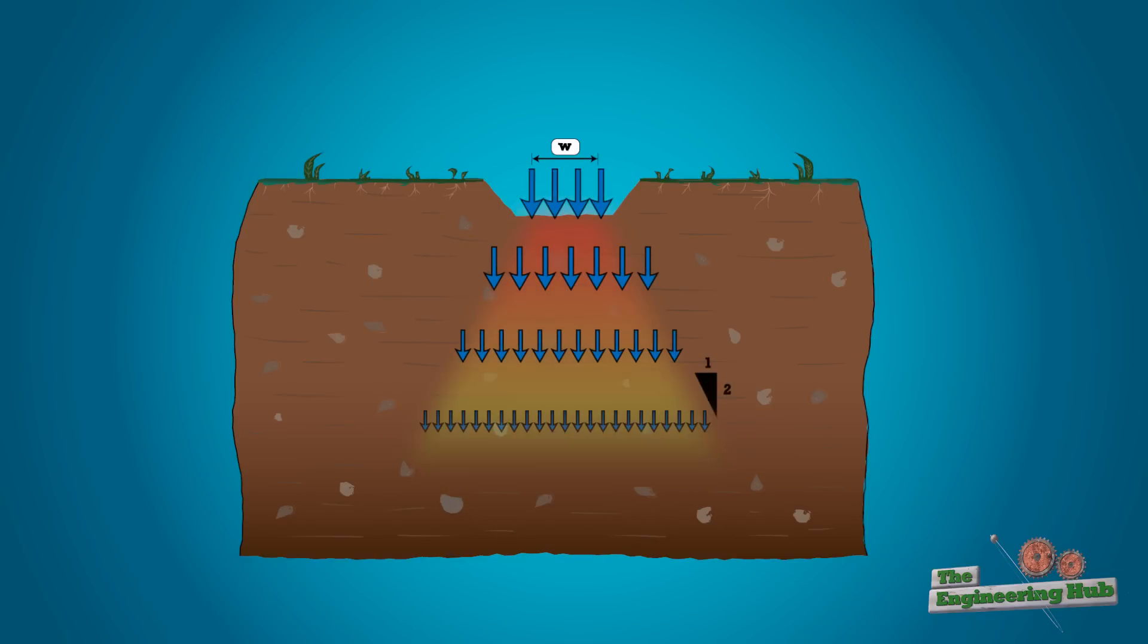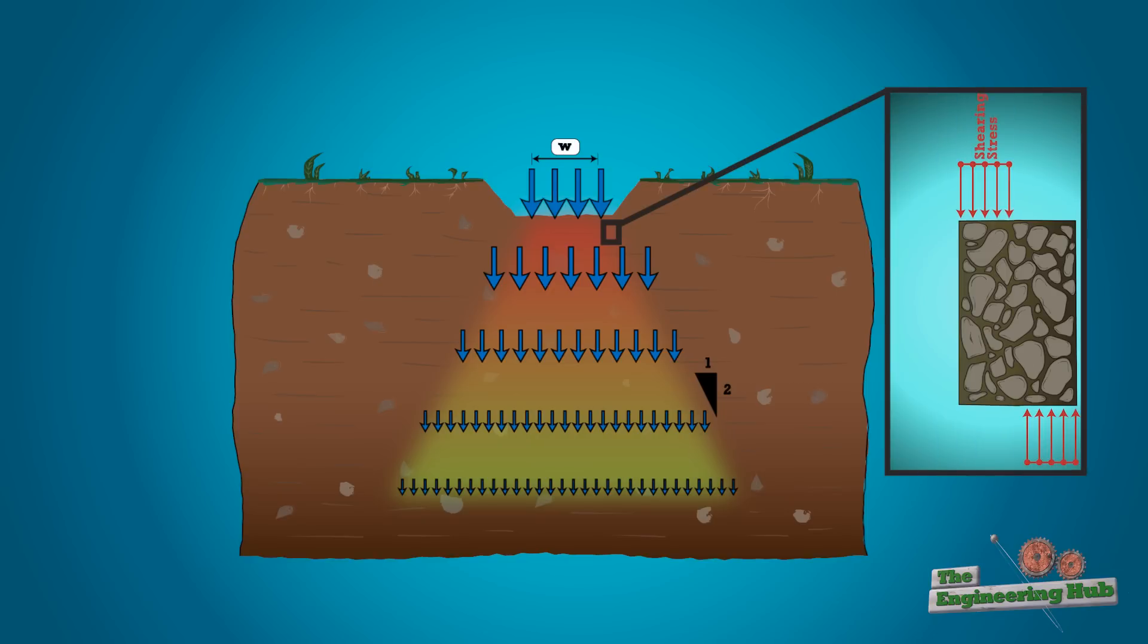This vertical stress pushes the soil grains down, which want to relieve the pressure by displacing to the side. This mechanism creates shearing stresses, which as you know from the previous videos in this series, are the reason why soils fail.